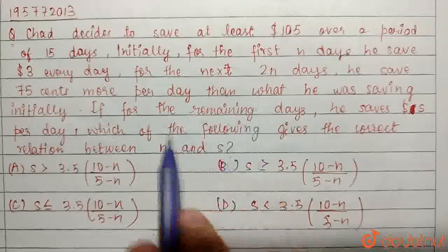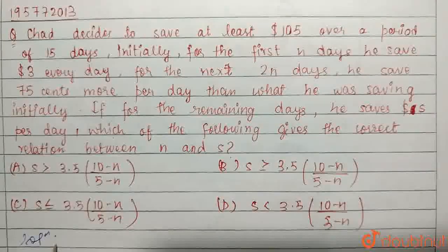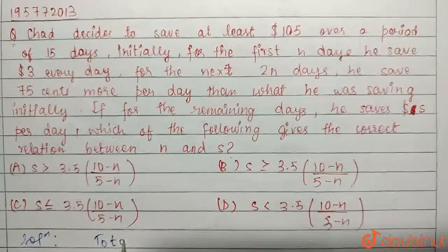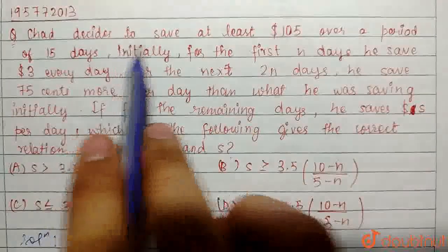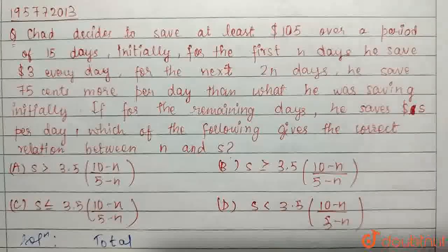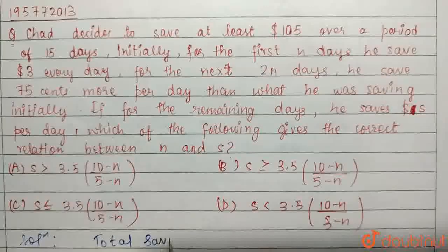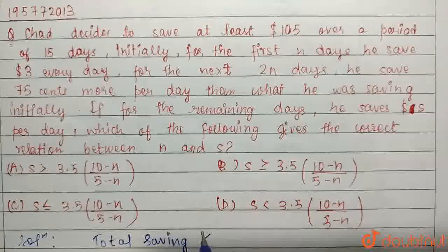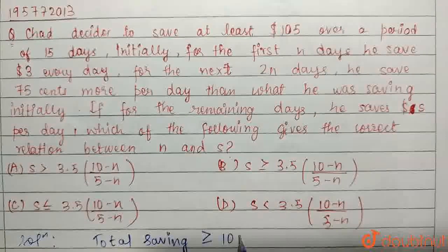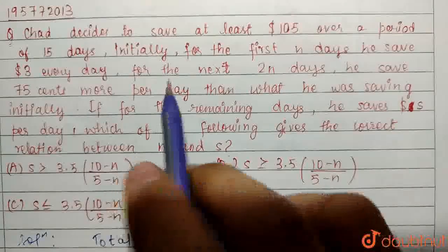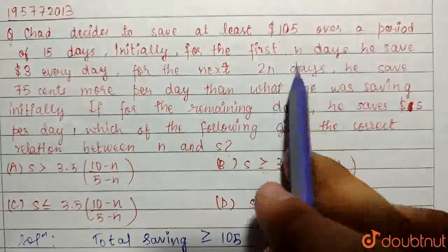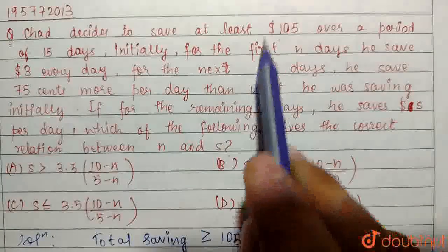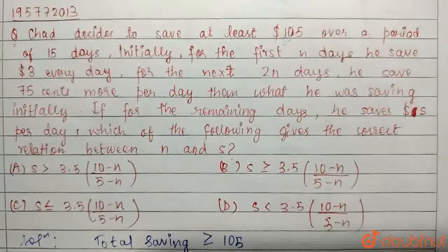We have to, we have been given that the total saving has to be greater than or equal to 105 dollars, since he saves at least 105. It can be greater than 105 or equal to it.